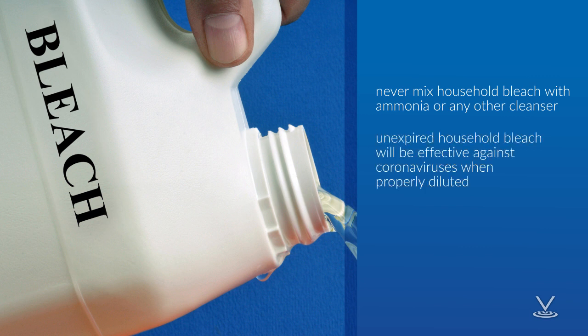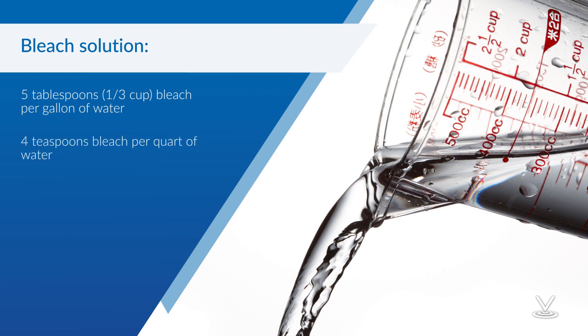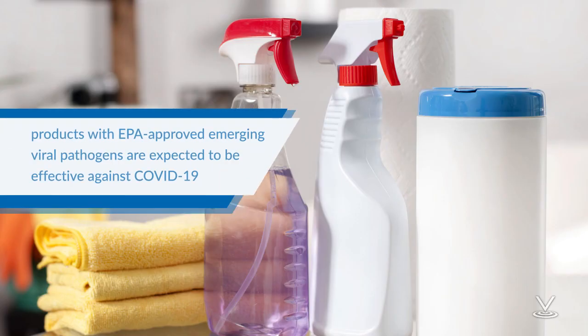Unexpired household bleach will be effective against coronaviruses when properly diluted. Bleach solutions can be prepared by mixing 5 tablespoons, or one-third cup, of bleach per gallon of water, or 4 teaspoons bleach per quart of water. Products with EPA-approved emerging viral pathogens claims are expected to be effective against COVID-19 based on data for harder-to-kill viruses. Follow the manufacturer's instructions for all cleaning and disinfection products, such as concentration, application method, and contact time.